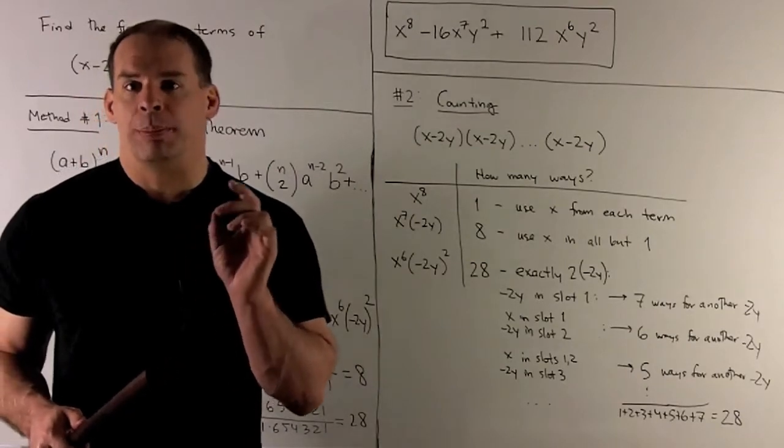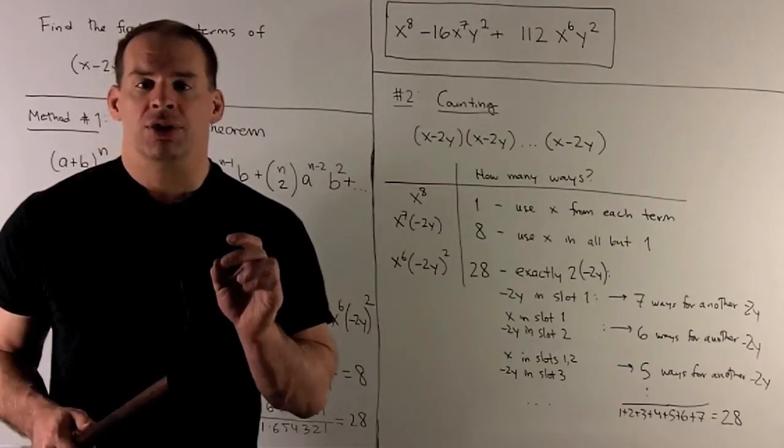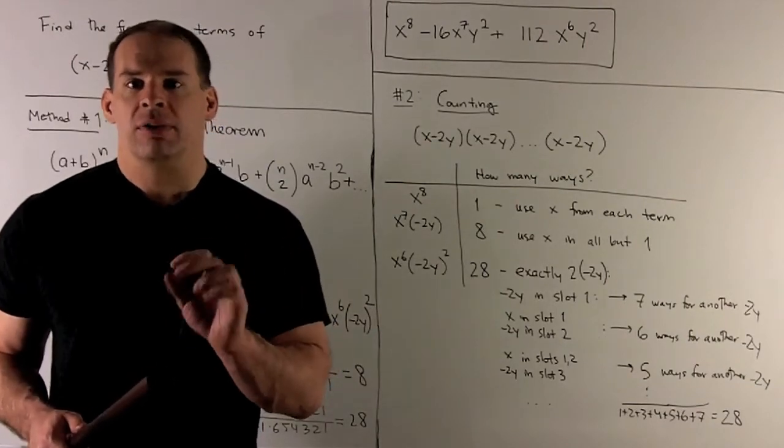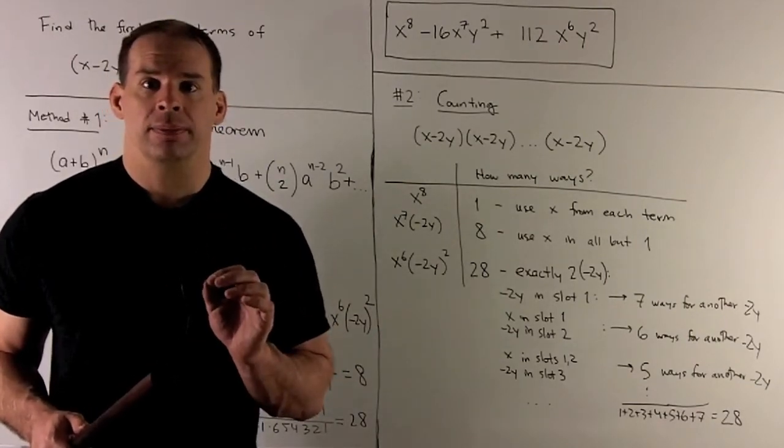Now, this is what your binomial coefficient is doing. So, 8 choose 1 says there are going to be 8 ways to choose 1 item from a set of 8.